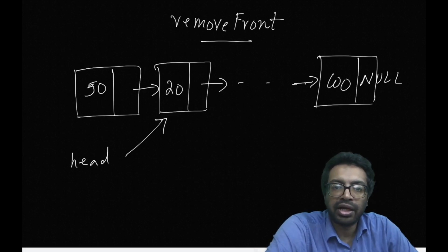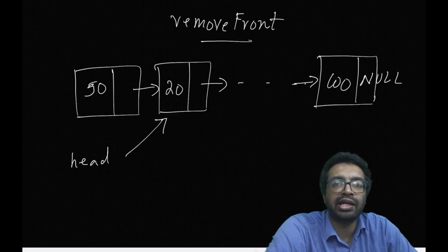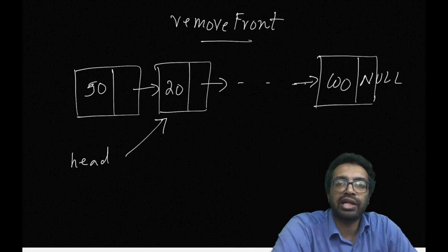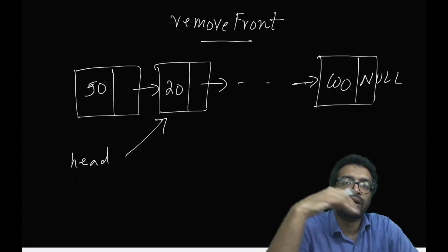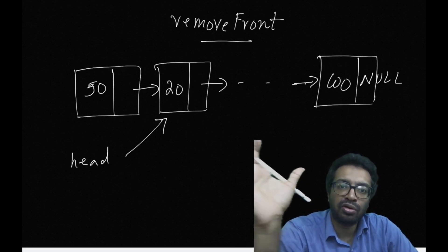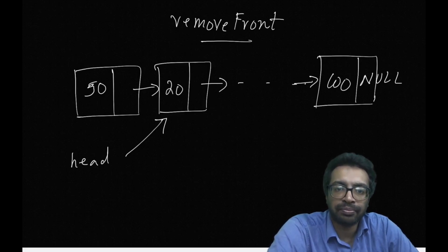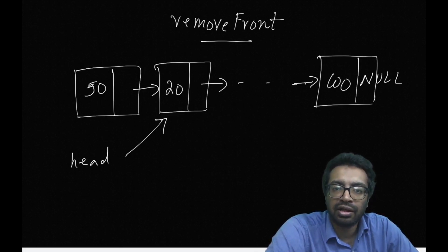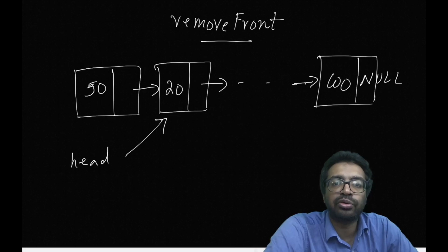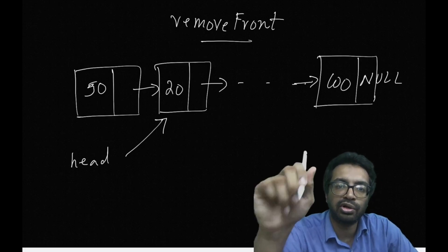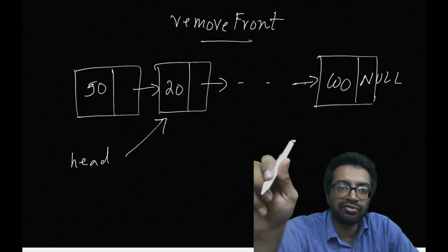How much time did it take to implement remove front? We can contrast this with the array implementation: if the list had n elements, you had to shift n minus 1 elements to the left to remove the front element at index 0. If the array had 1 million elements, it's going to take some time. In our linked list representation this does not happen. Just like add front, the remove front function's time is also independent of the number of elements. It does not matter if the list had 1 million, 10, or 100 elements — it takes the same time because it only traverses one node: the front node.